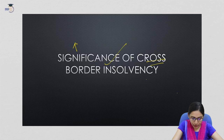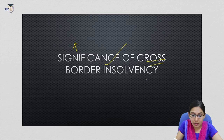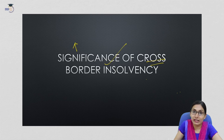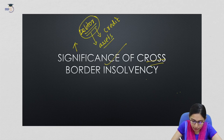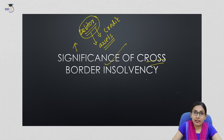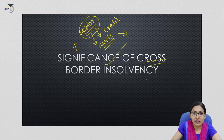Cross-border insolvency means the regulation of the treatment of financially distressed debtors where the debtors have assets or creditors in more than one country. For example, if a person who has taken a loan or credit from more than one country and has assets in more than one country, it is called cross-border insolvency.